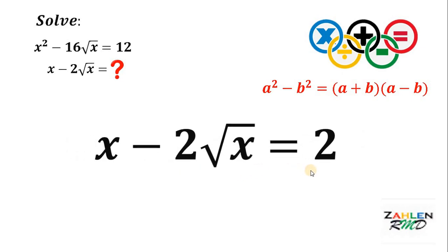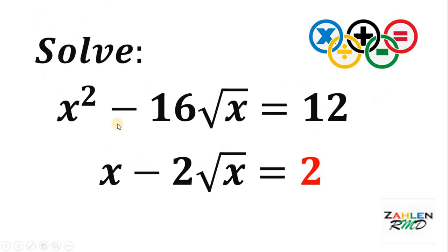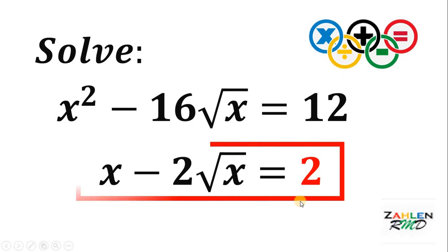Therefore, if we have the equation x squared minus 16 times square root of x equals 12, then x minus 2 times square root of x must be 2. And as always, we're done.